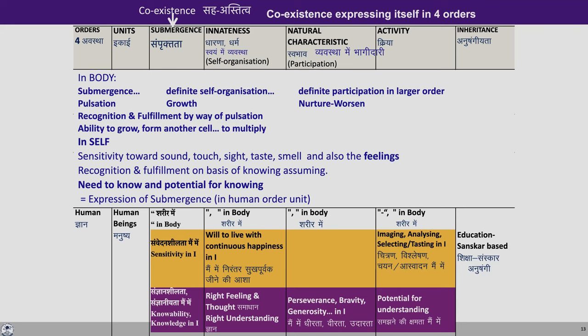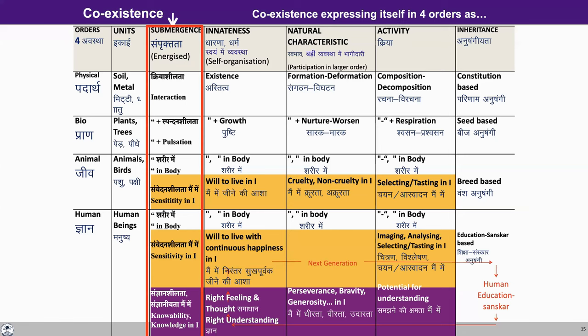Putting it all together, we can observe how submergence — coexistence — expresses itself in the four orders. In the physical order it is in terms of interaction; in the bio order, interaction and pulsation; in the animal order the body has interaction and pulsation and the self has sensitivity; in the human order the body has the same and the self has sensitivity plus knowability. With right understanding and right feeling, knowledge is ensured, the will to live with continuous happiness is fulfilled, and this is to be ensured through human education and samskara.